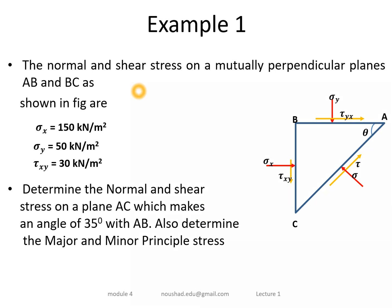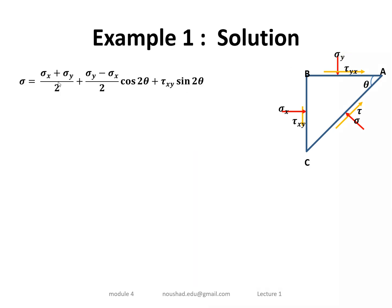Consider an example: the normal and shear stresses on mutually perpendicular planes AB (horizontal) and BC (vertical) are given as sigma_x = 150, sigma_y = 50, and shear stress = 30. Determine the normal and shear stress on plane AC, which is inclined at 35 degrees to AB. Also determine the major and minor principal stresses sigma_1 and sigma_3. Using the equation: sigma equals (sigma_x + sigma_y)/2 plus (sigma_y − sigma_x)/2 · cos 2θ plus tau_xy · sin 2θ.